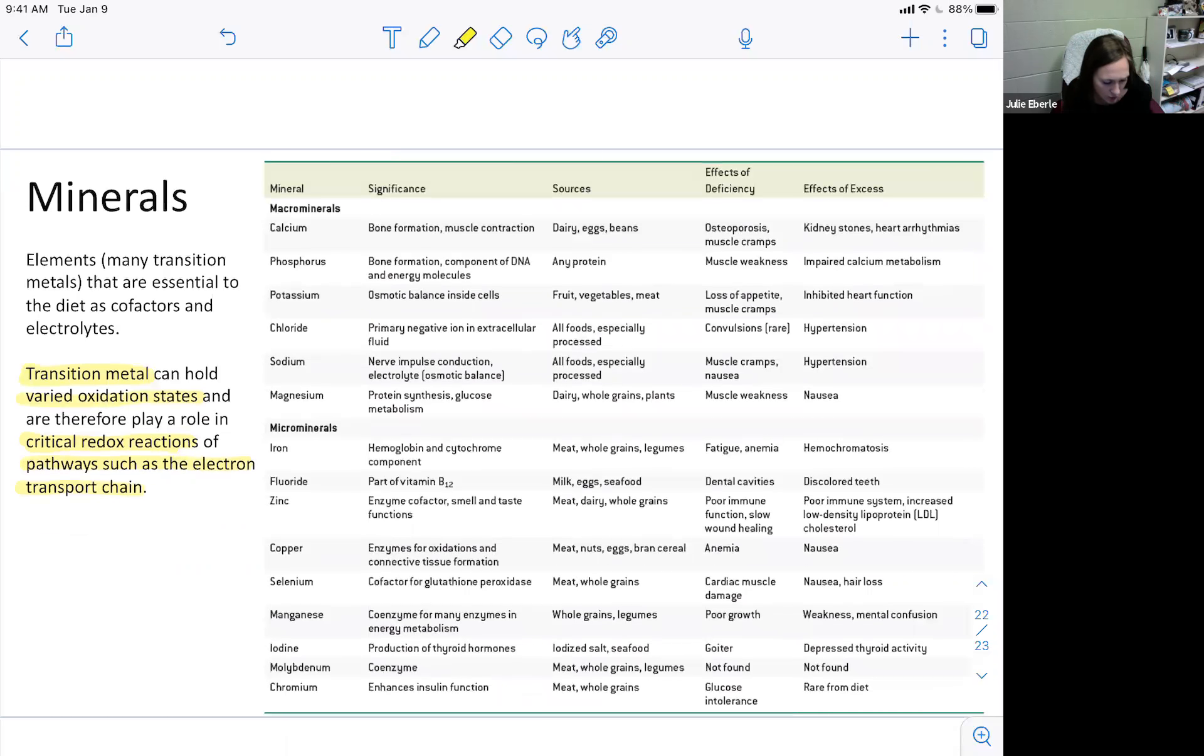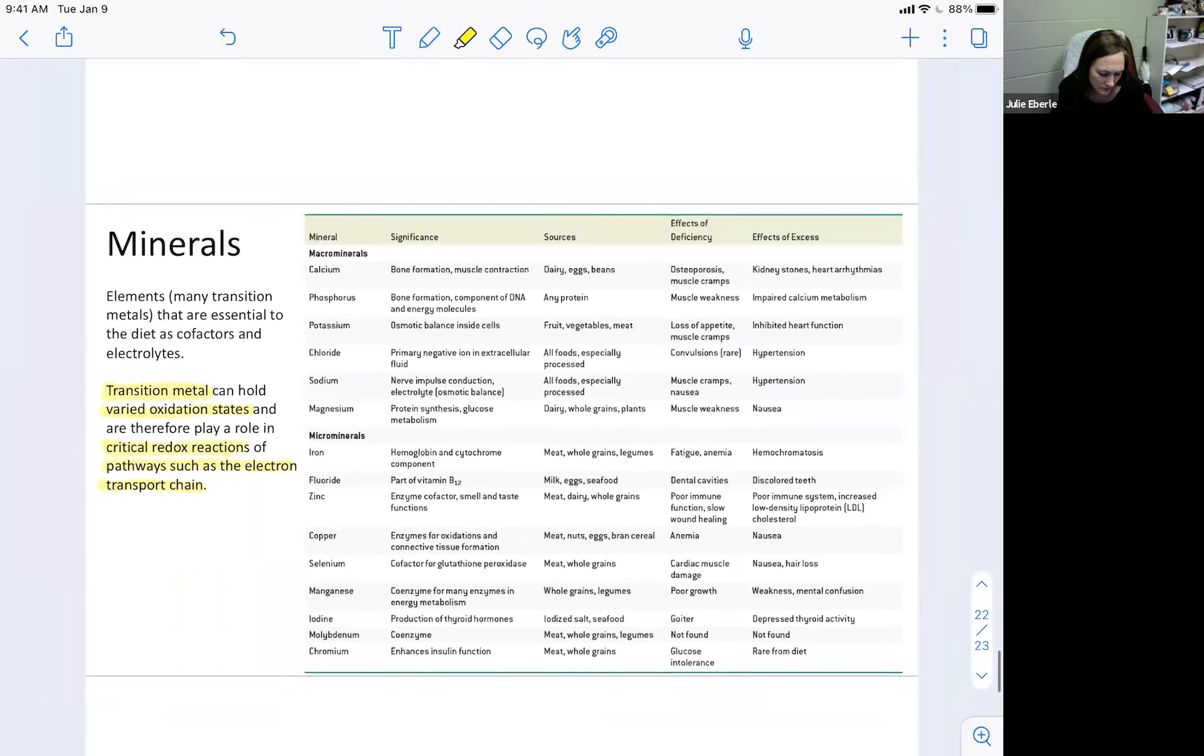This table shows you that you need some minerals more than others - that's why they call them macro minerals and micro minerals. You need more of like your potassium and your calcium and your chloride and sodium than you do like copper and selenium and magnesium. For these I'm probably not going to ask you to memorize all the deficiencies and effects of excess, but know the difference between macro and micro, and be able to give an example of a macro and a micro mineral. I'm not going to ask you to list all of them, but I would ask you to tell me an example of one or the other.